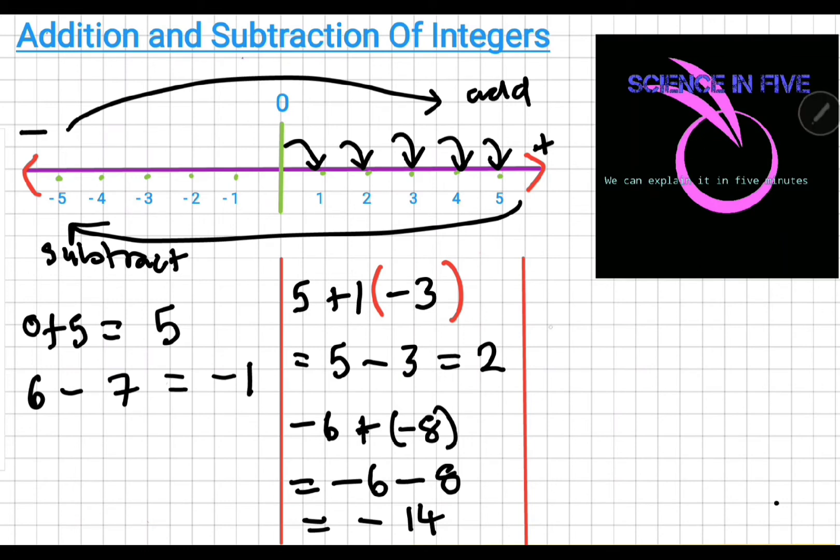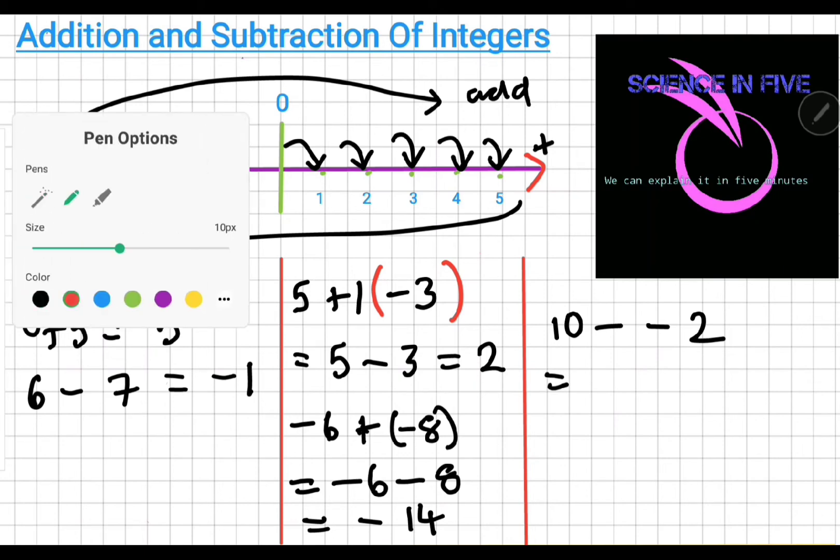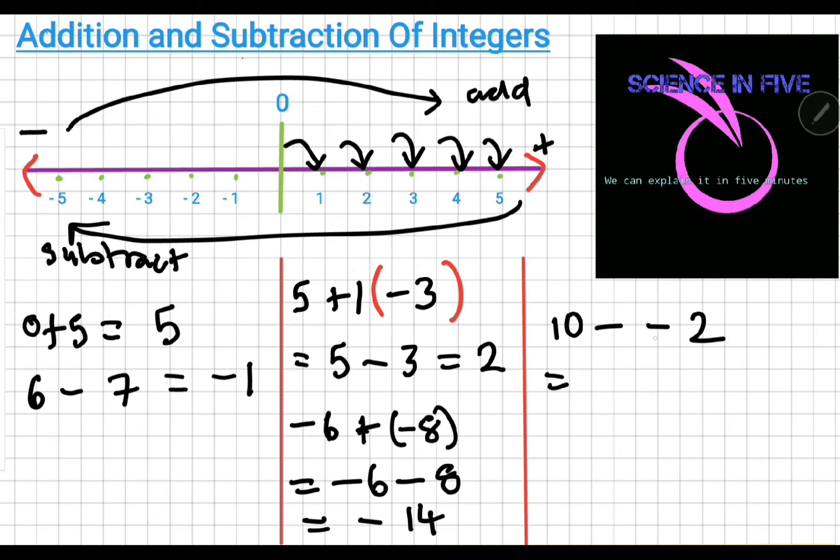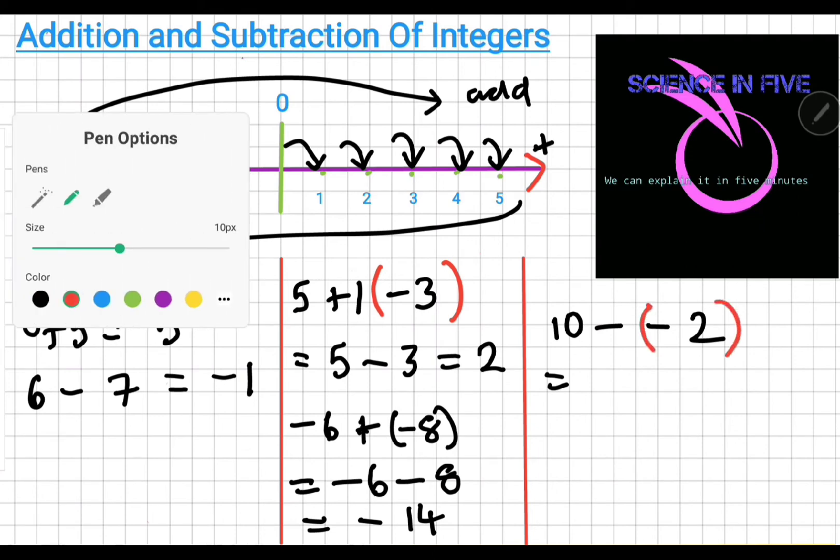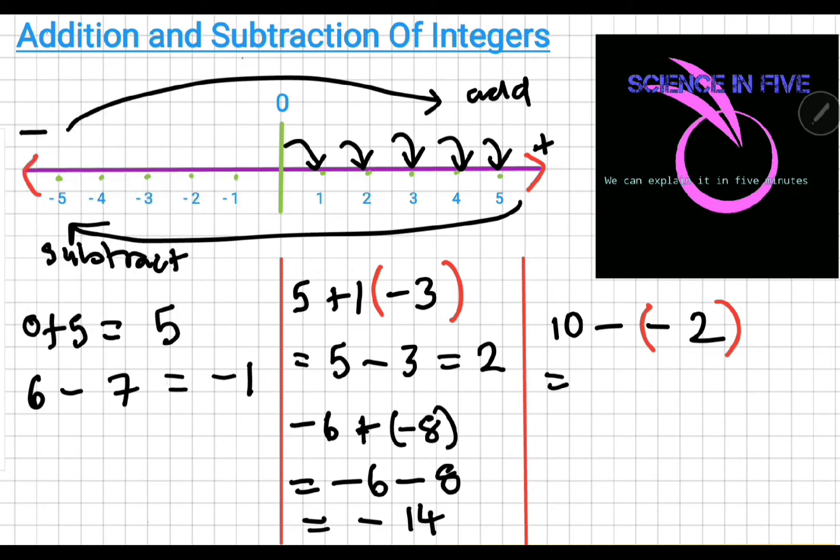Suppose I have ten minus minus two. Again, I can see there's an operator and then there's a negative number. So, I'm going to put the negative number in a bracket. Once I've done that, I know that there's an invisible one outside the bracket. Now, I multiply the invisible one with a negative two inside. Minus one times minus two becomes a positive.